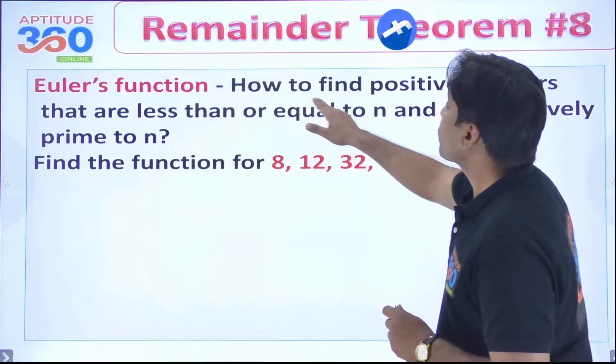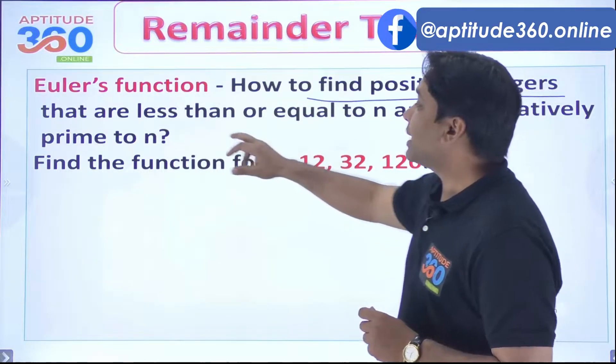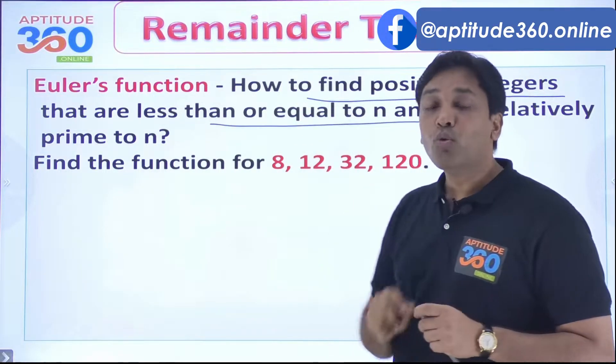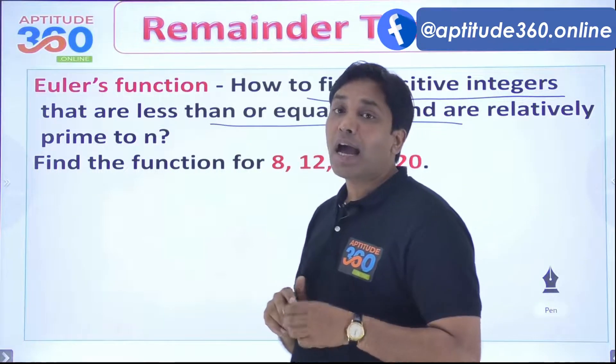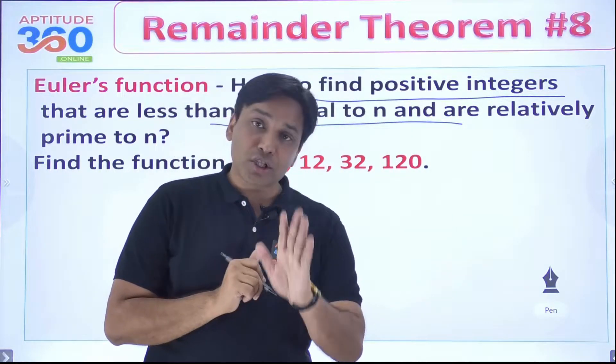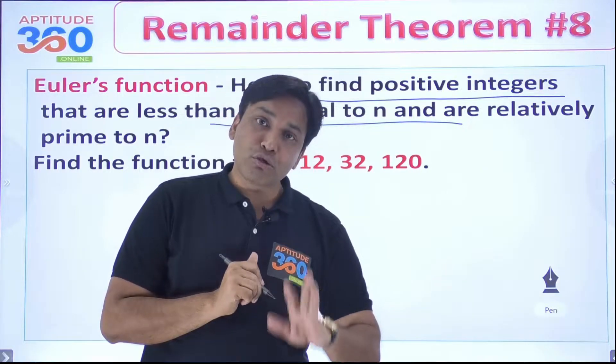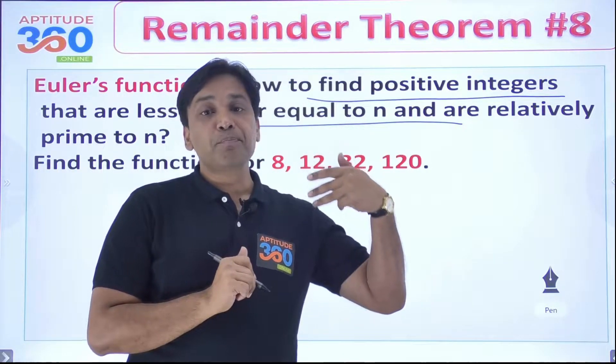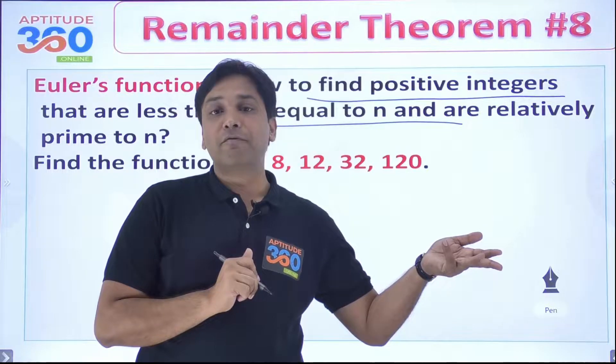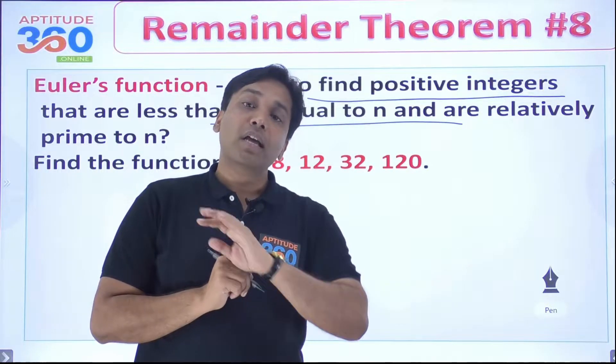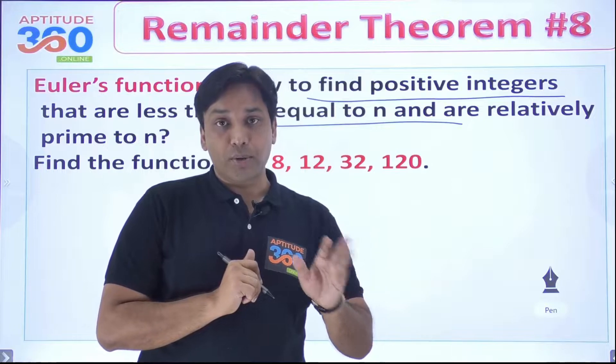This theorem says how to find positive integers that are less than or equal to any natural number n and are coprime. Probably my assumption is that you understand what is the meaning of coprime. If you do not know what is the meaning of coprime, go into the LCM and HCF videos that we have made for you. Over there, this concept is completely and totally clear.